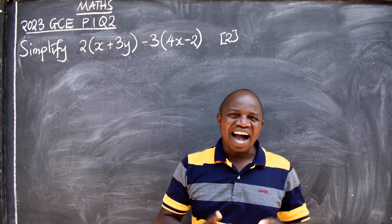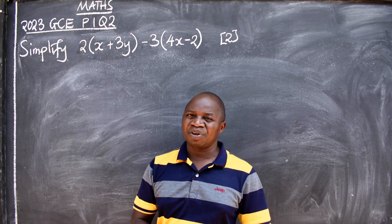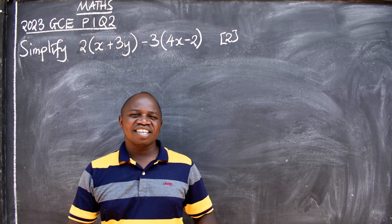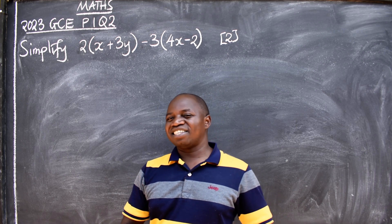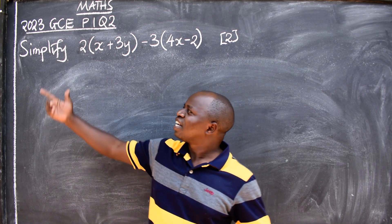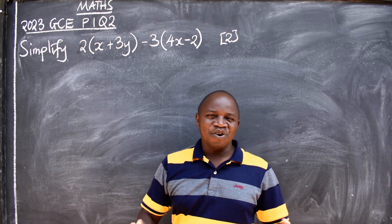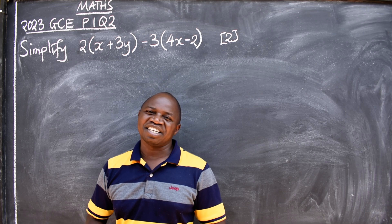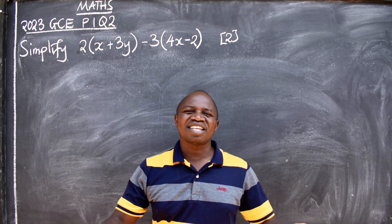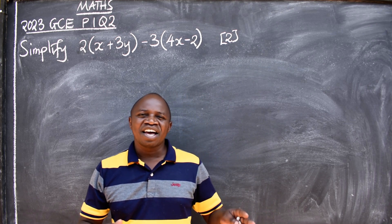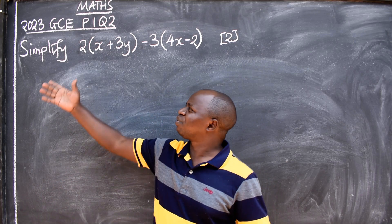First thing: identify the topic from which the question is coming from. What topic is this? This is algebra. The stem of the question says simplify — are we solving? No. Are we factorizing? No. Are we evaluating? No. We are simply simplifying, which means you make it easy or shorten the number of terms.